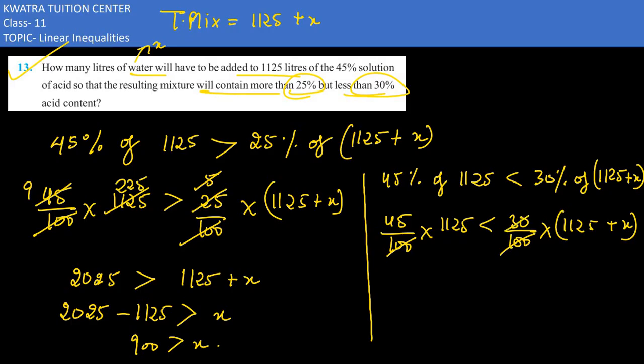We cancel 100 to 100. Cancel 30 to 45. This would be 6, this would be 9. Cancel 6 to 9. This is 2, this is 3.